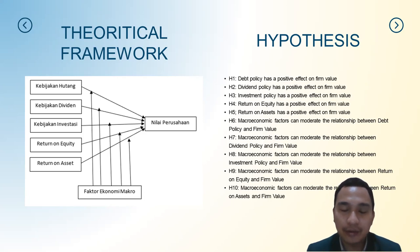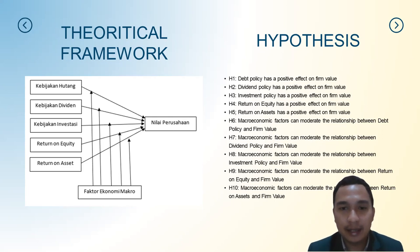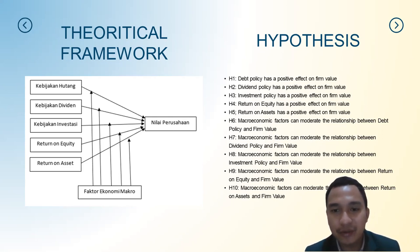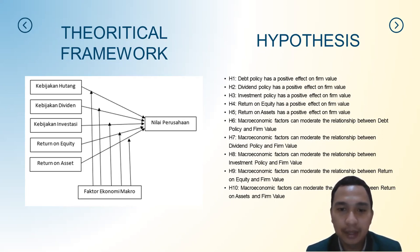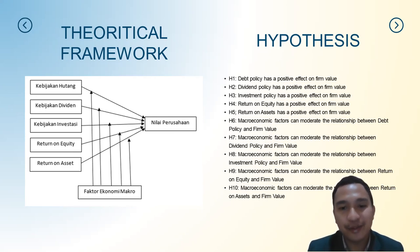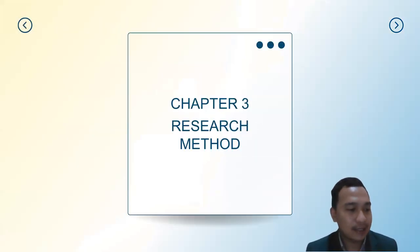The hypotheses are: (1) debt policy has a positive effect on firm value; (2) dividend policy has a positive effect on firm value; (3) investment policy has a positive effect on firm value; (4) return on equity has a positive effect on firm value; (5) return on asset has a positive effect on firm value; (6) macroeconomic factors can moderate the relationship between debt policy and firm value; (7) macroeconomic factors can moderate between dividend policy and firm value; (8) macroeconomic factors can moderate between investment policy and firm value; (9) macroeconomic factors can moderate between return on equity and firm value; (10) macroeconomic factors can moderate the relationship between return on asset and firm value.